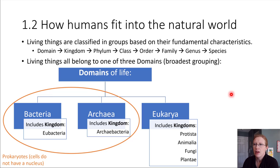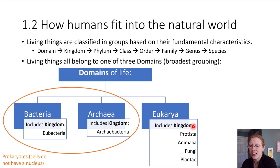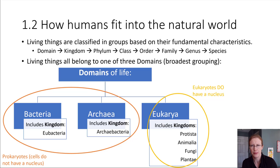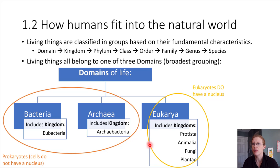The third domain of life is eukarya — this is where we're going to be this semester. Humans are in this domain. If we look at the cells of these organisms, they do have a nucleus — a special protective shell around the DNA. Once we divide things up at this level, we can take it even further and look at even more specifics within the eukarya.